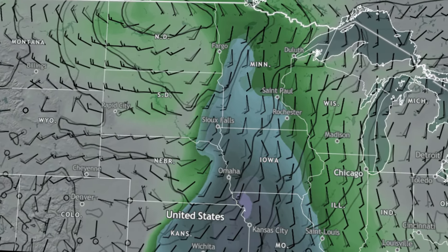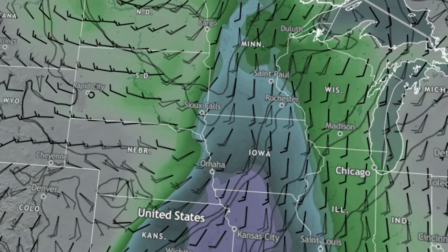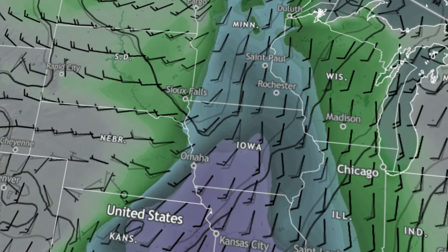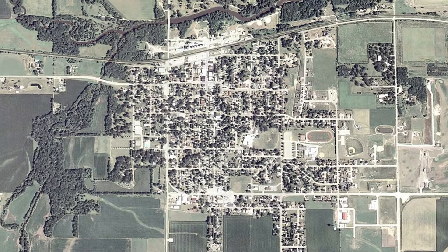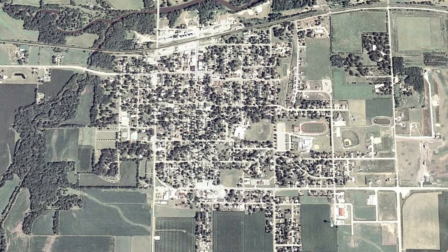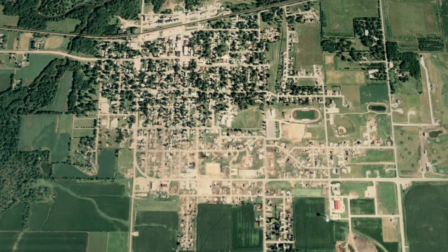On May 25th, 2008, a storm complex that had already wreaked havoc across the high plains moved into the upper midwest. By the end of that day, a small town just northwest of Waterloo, Iowa would become cemented in tornado history.